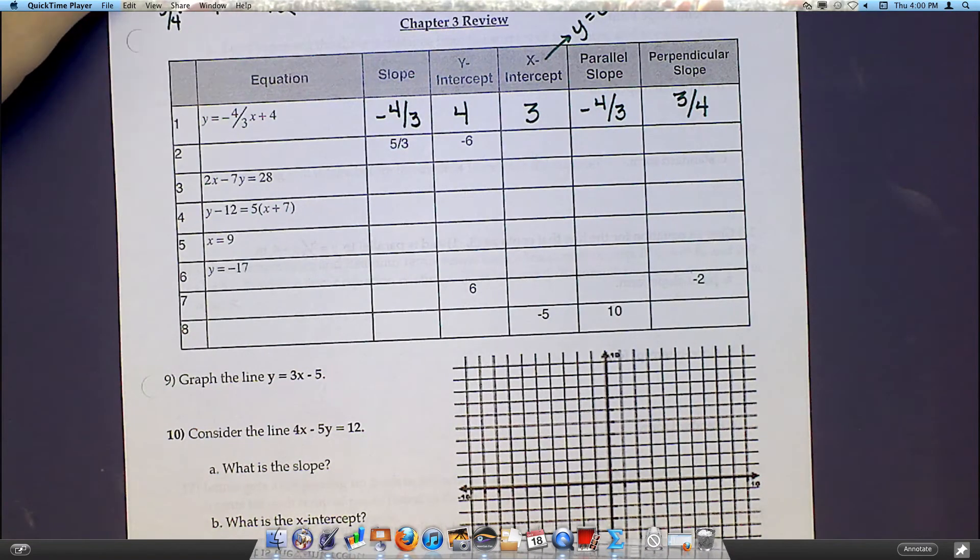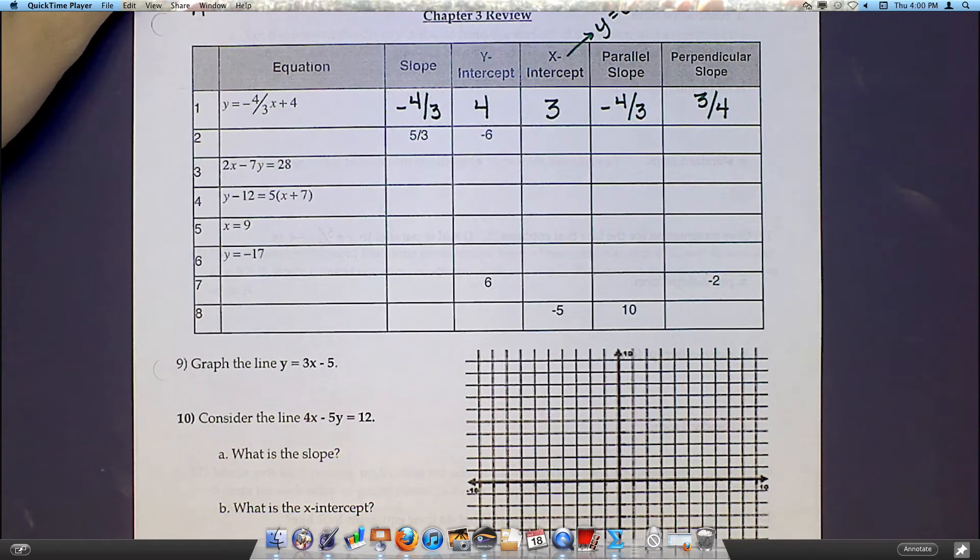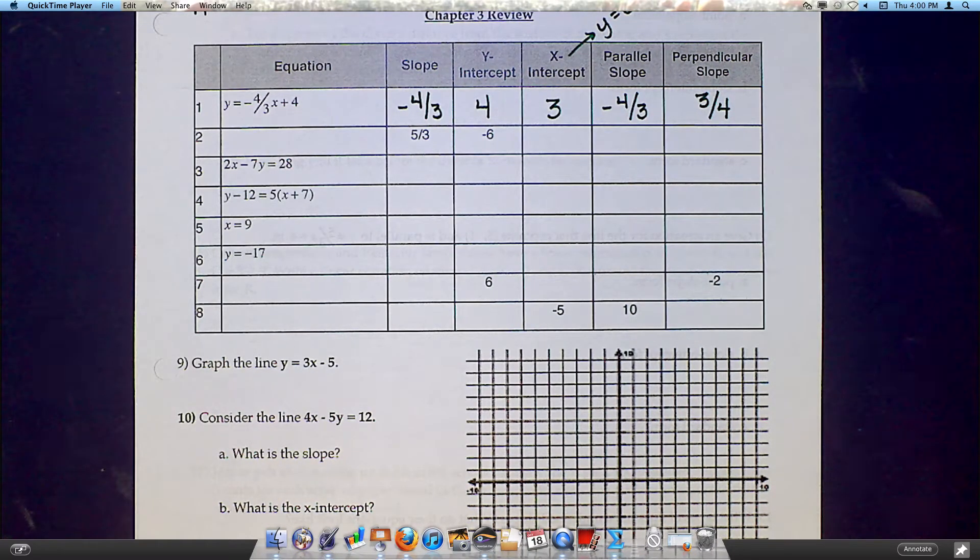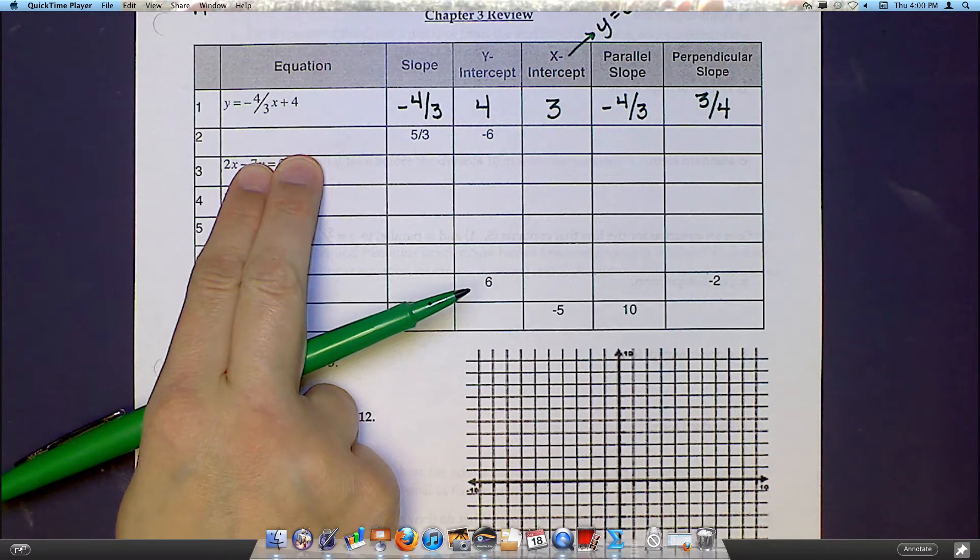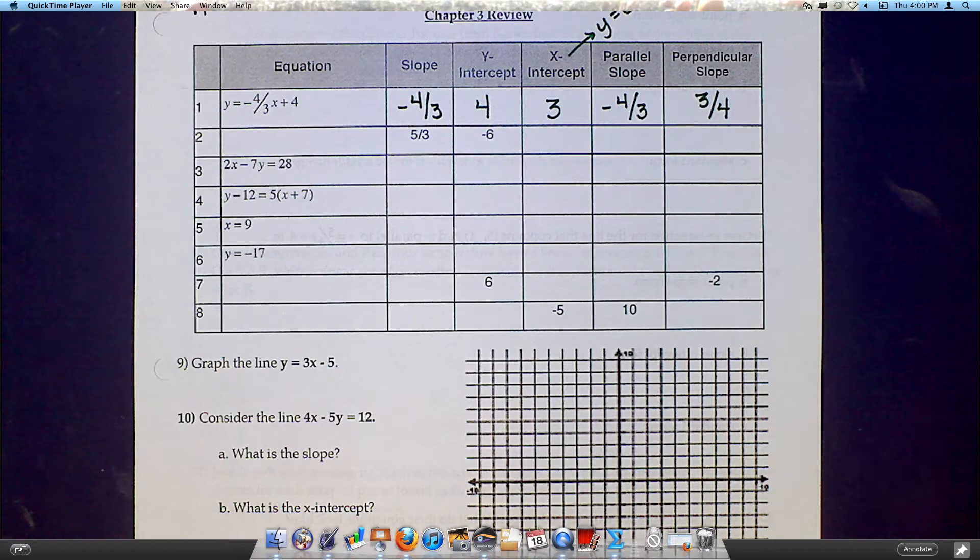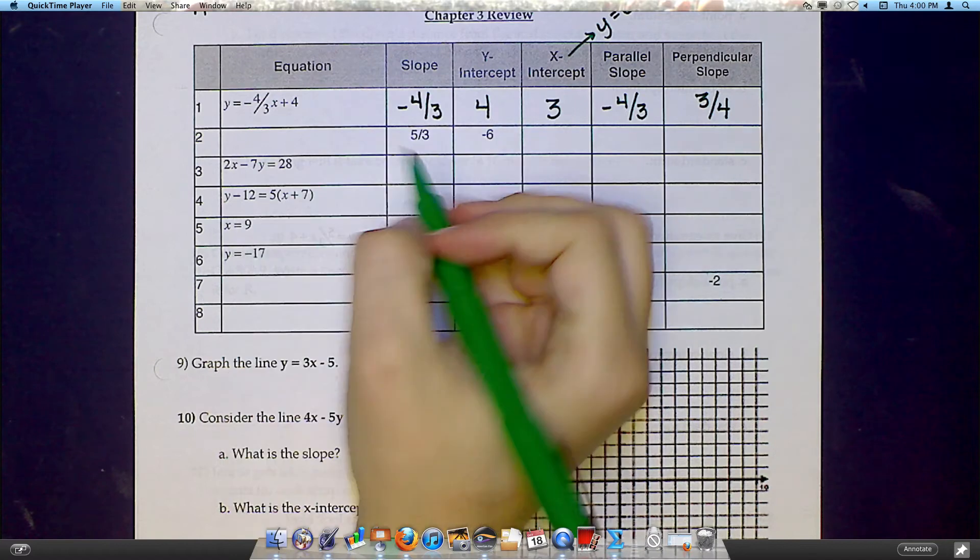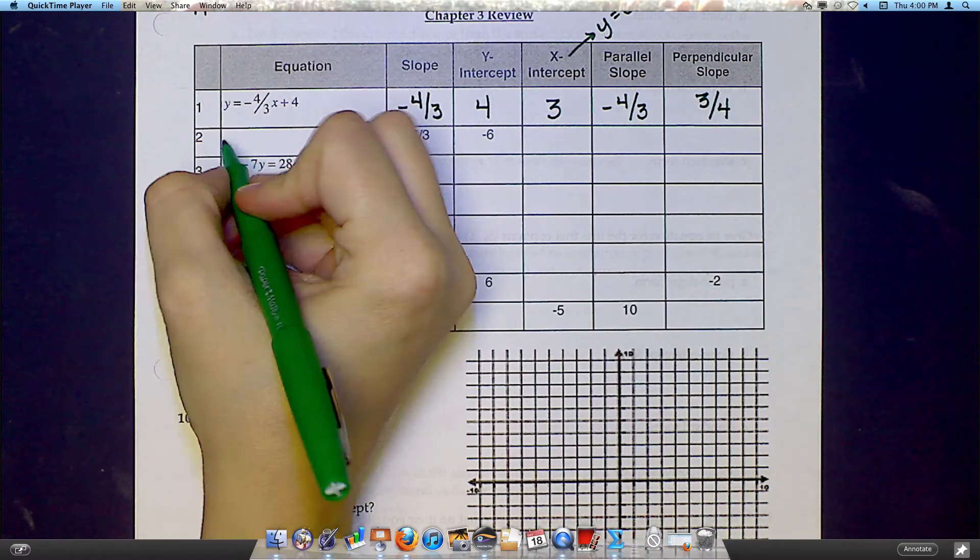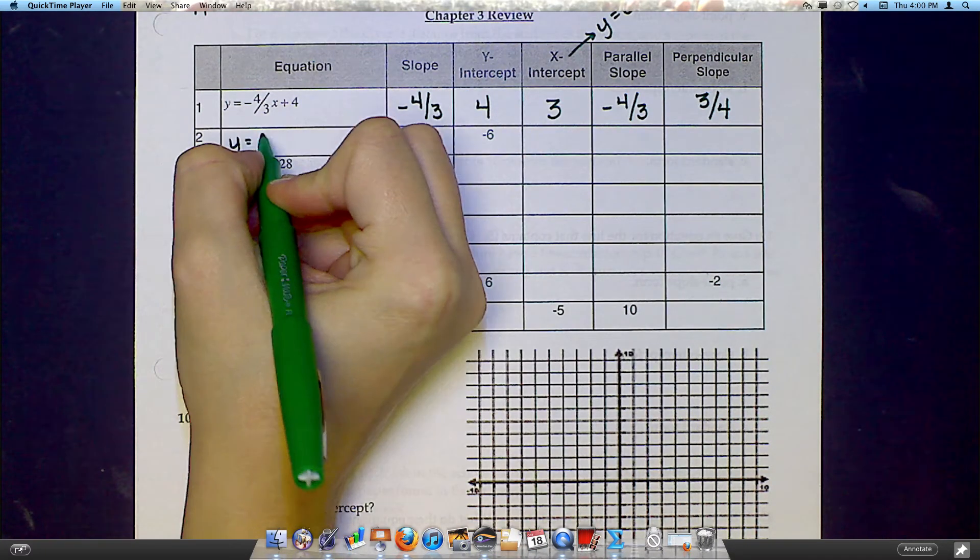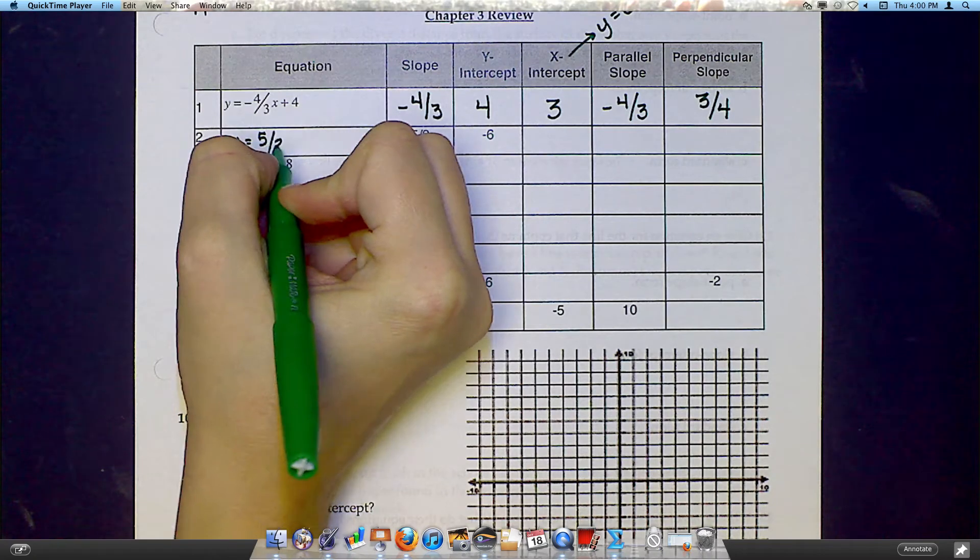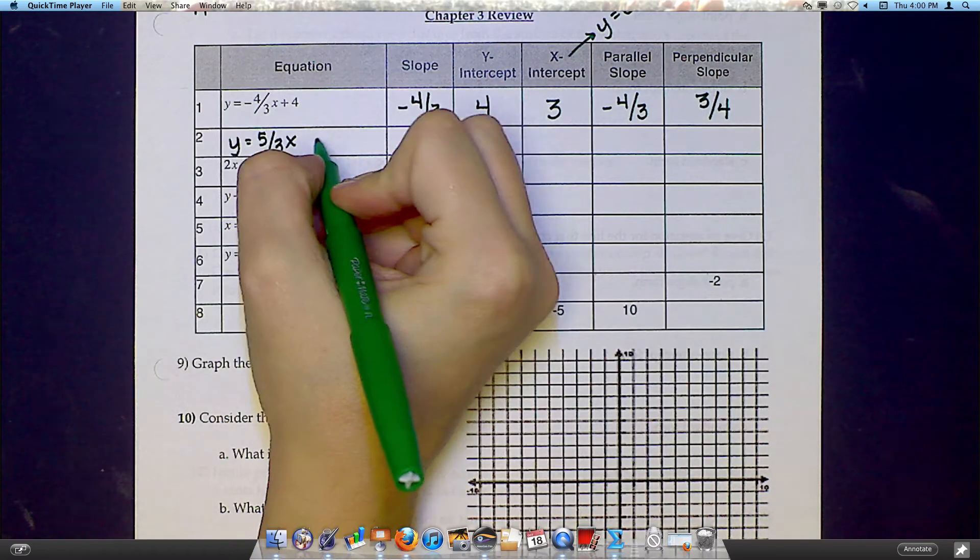Looking down at number 2. Number 2 gives us the slope and y-intercept, but we have to write our own equation. So we're really just going backwards from what we did in number 1. This is my m, and this is my b. So my equation would be y equals 5 thirds x minus 6.